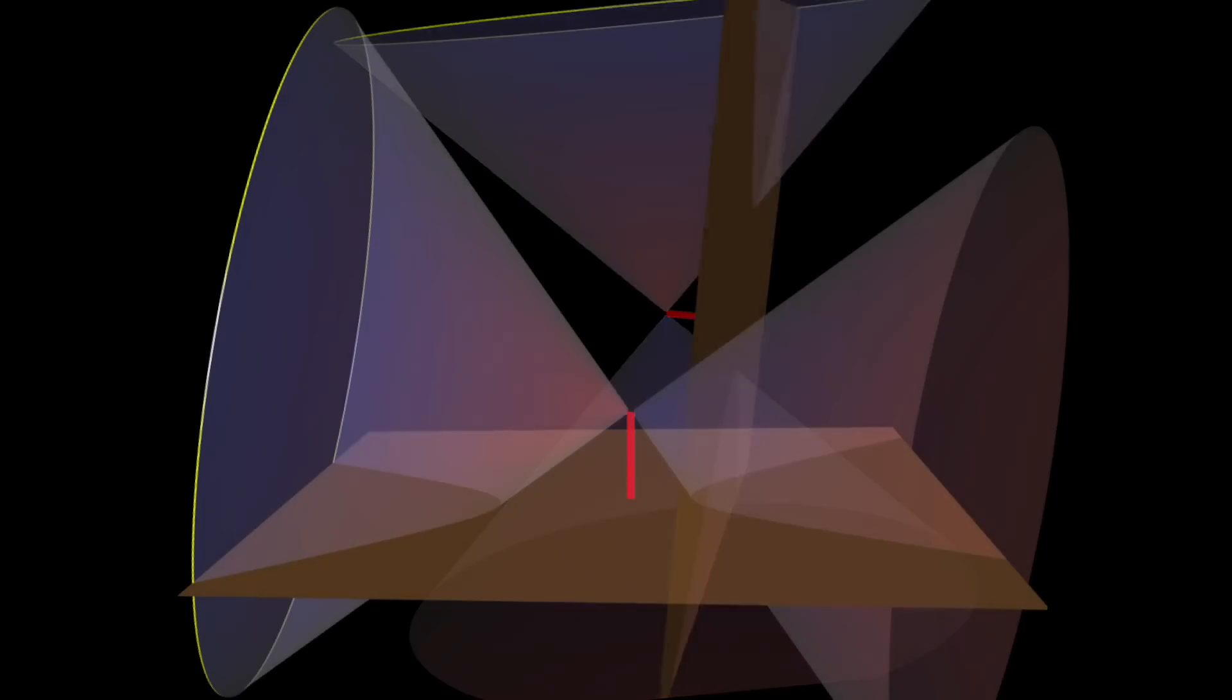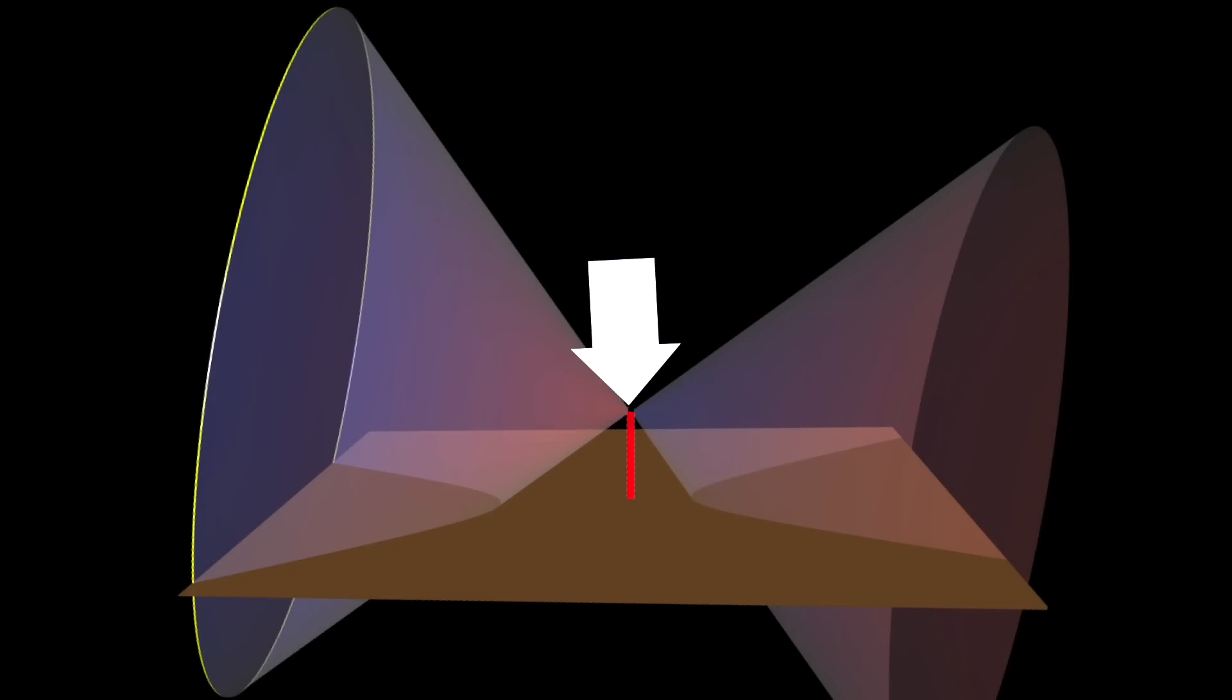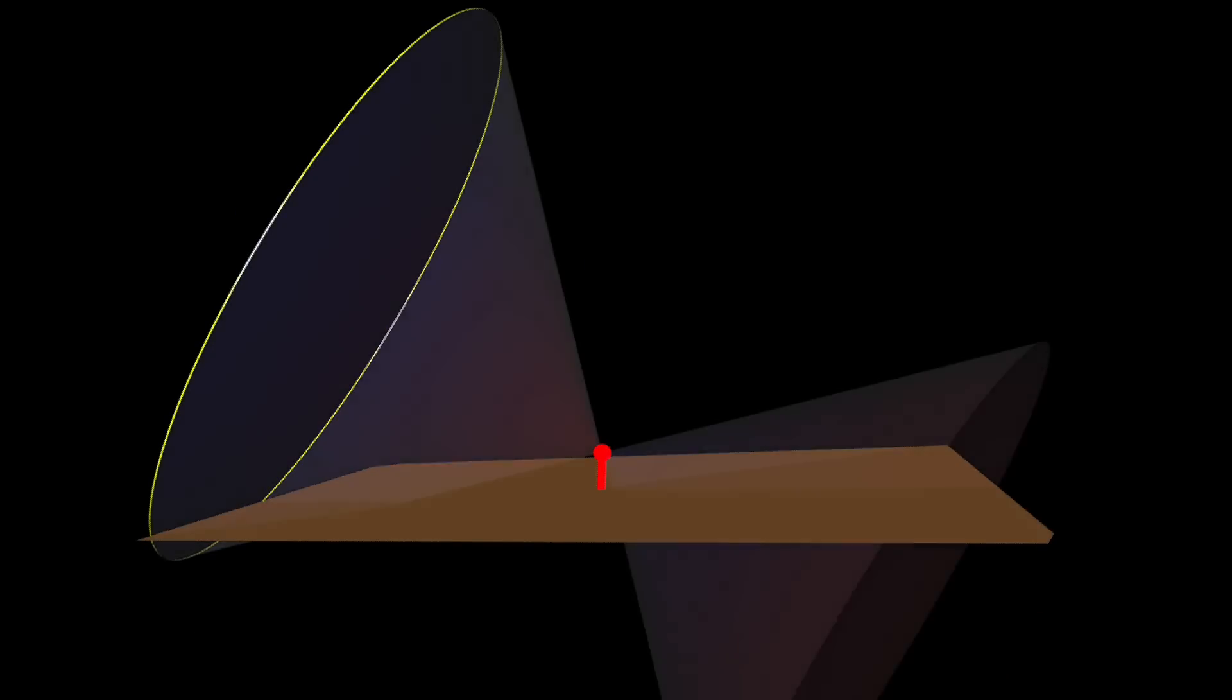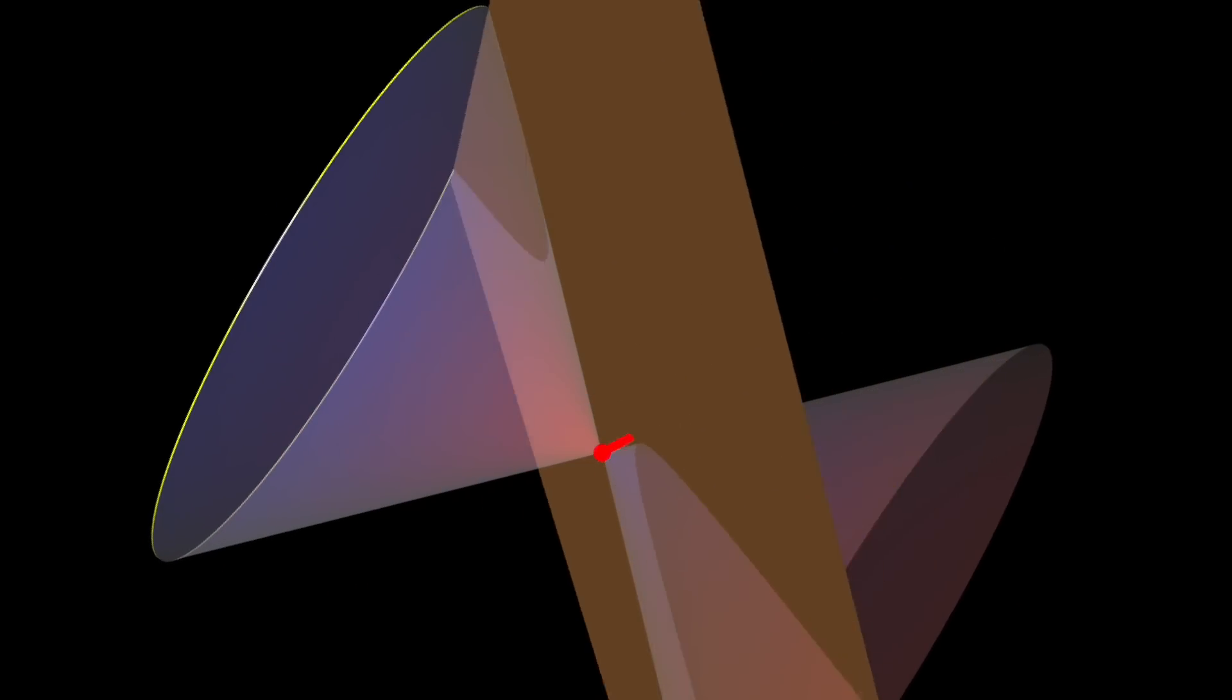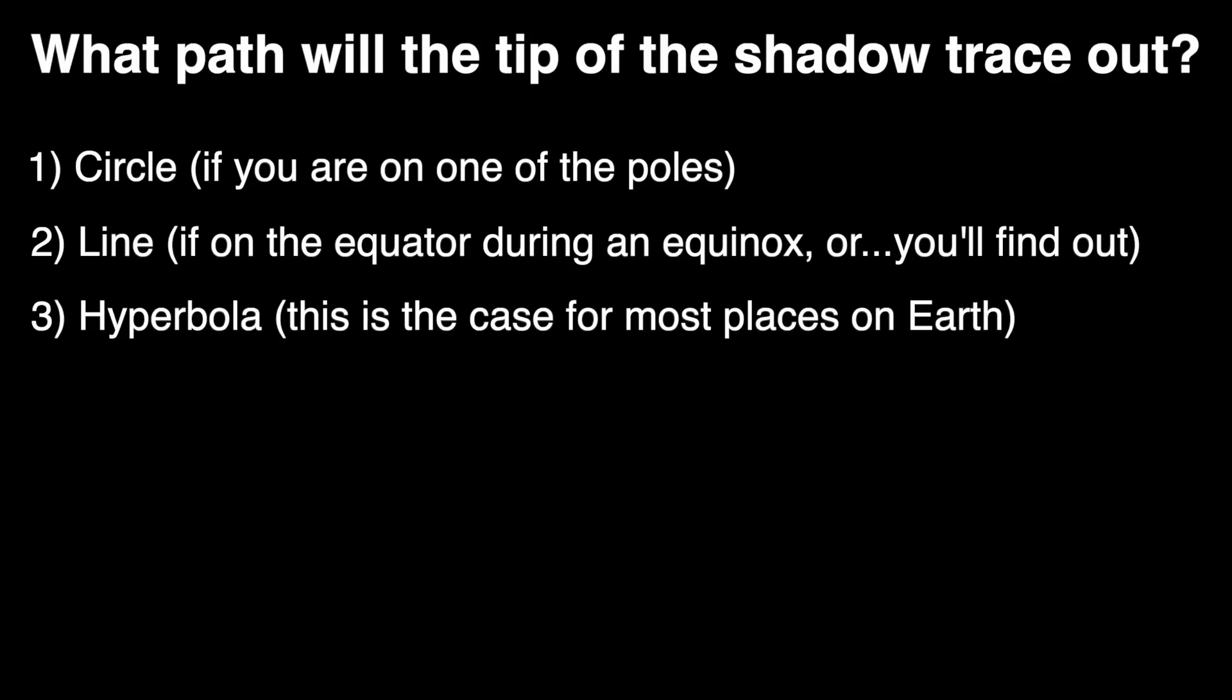Now, it might seem weird to some of you that the apex of the cone is on the tip of the stick, and you're right. It wouldn't be a perfect cone centered there. But the sun is very far away, so this still works. It is an approximation, but a pretty accurate one. And if we're somewhere in the world with even more tilt, still, you're likely to get a hyperbola.